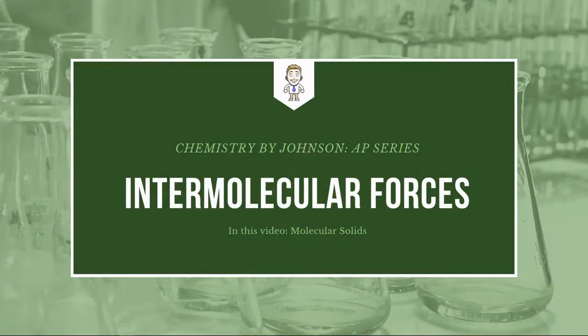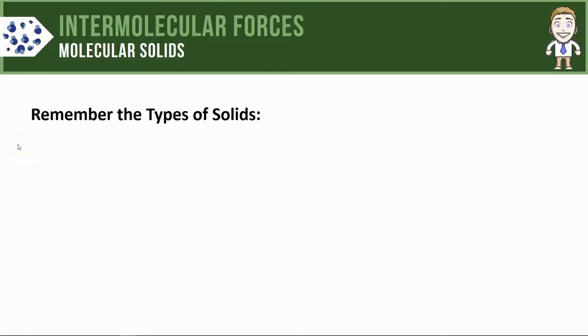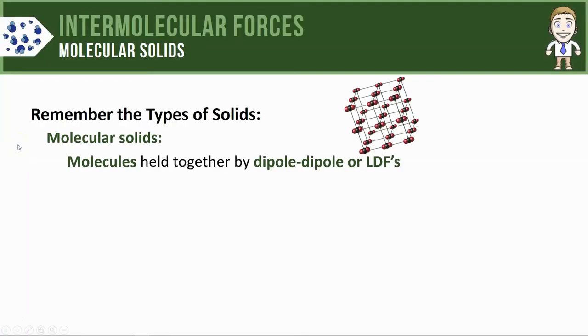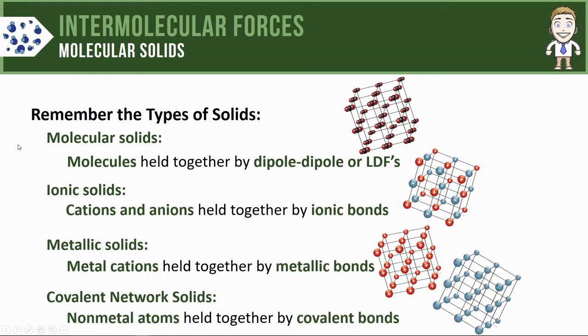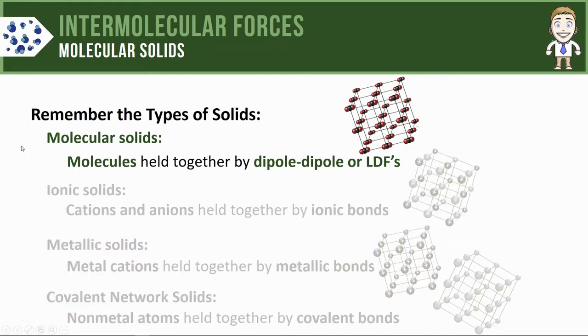Hey everyone, in this AP Chem series video we're going to take a close-up look at a type of solid known as a molecular solid. First, remember from the last video that there are many different types of solids: molecular solids, ionic solids, metallic and covalent network solids. This video will take a close-up look at the structure and properties of molecular solids.